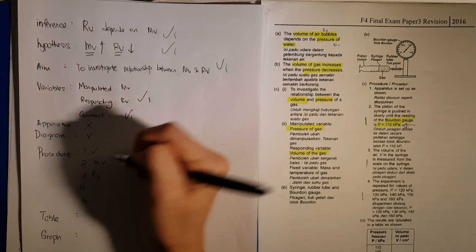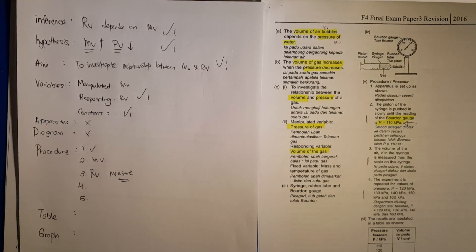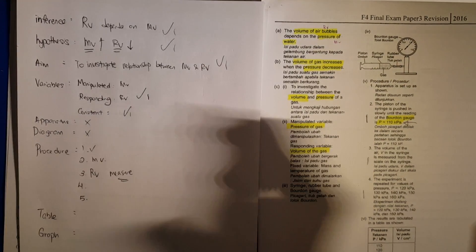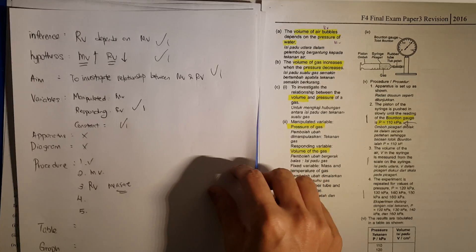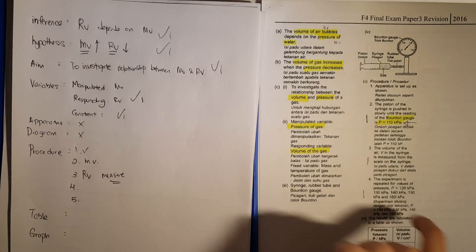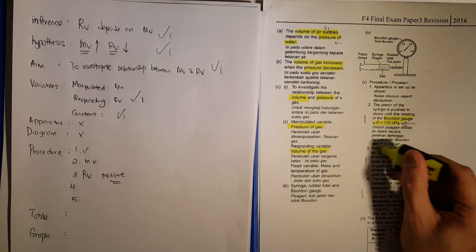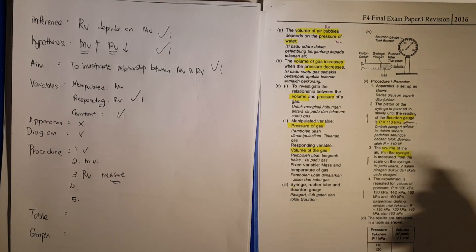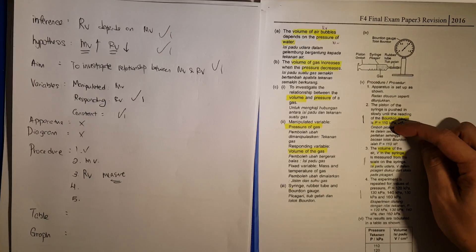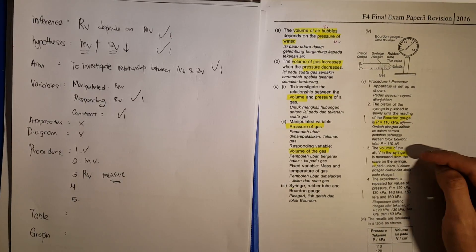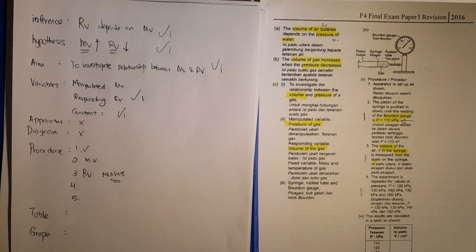The third procedure step is about the responding variable. You need to state how you're going to measure it and using what apparatus. In this experiment the responding variable was volume, so I'll measure volume using a syringe. The volume is measured using a syringe with a scale on it. So you get one mark for the manipulated variable apparatus measurement and one mark for the responding variable apparatus measurement.